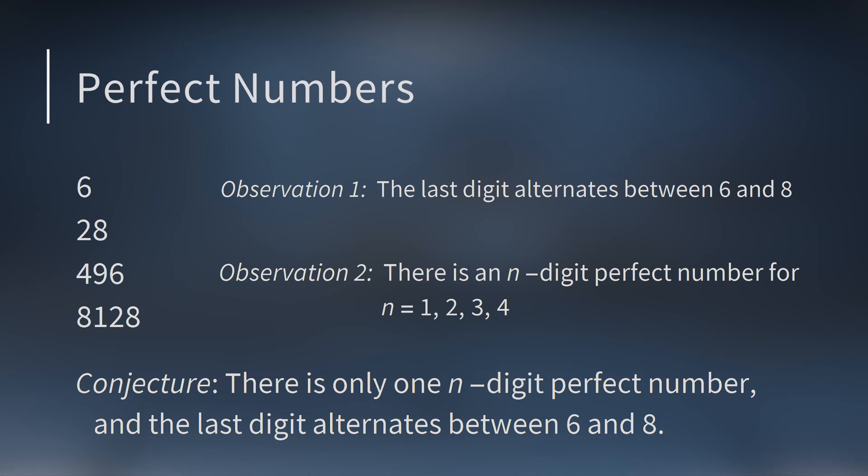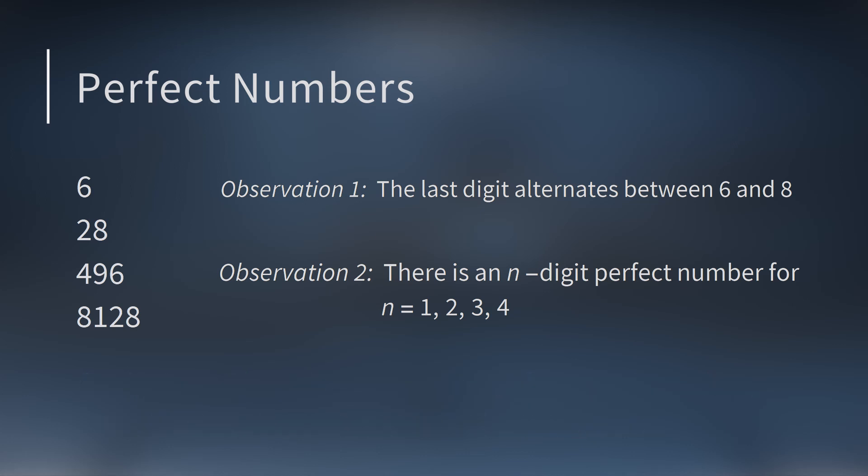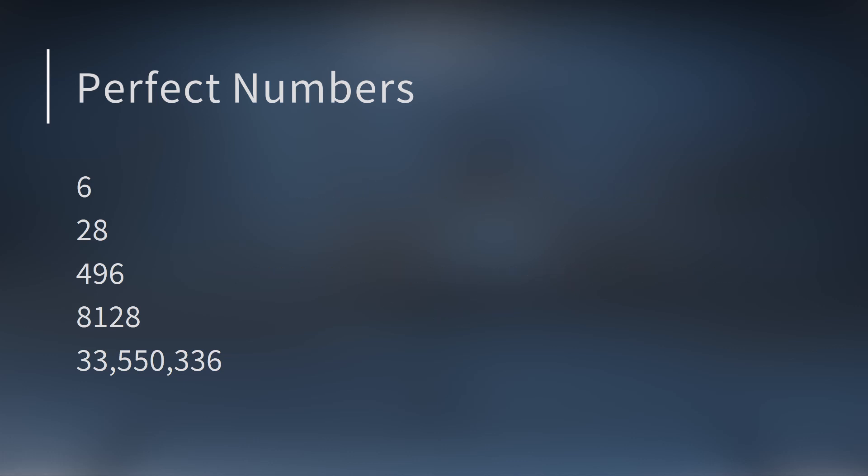Unfortunately, it turns out this pattern breaks down pretty quickly, because the fifth perfect number is 33,550,336. It does end in 6, but it does not have five digits. But it was a pretty good guess based on just four examples.